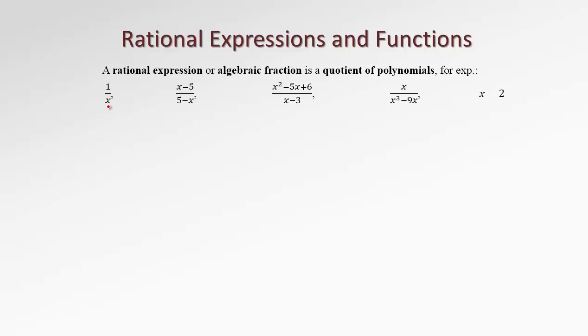In the first example we see the reciprocal of x. It is an algebraic fraction because it contains a variable. In the second example we have a linear polynomial divided by another linear polynomial. We'll see later this fraction is actually equivalent to negative 1. In the next example we have a quadratic polynomial divided by a linear polynomial. In the following one we have a linear polynomial divided by a cubic polynomial. In the last example it's a little bit degenerated rational expression, but we can always think of it as a linear polynomial divided by one zero degree polynomial.